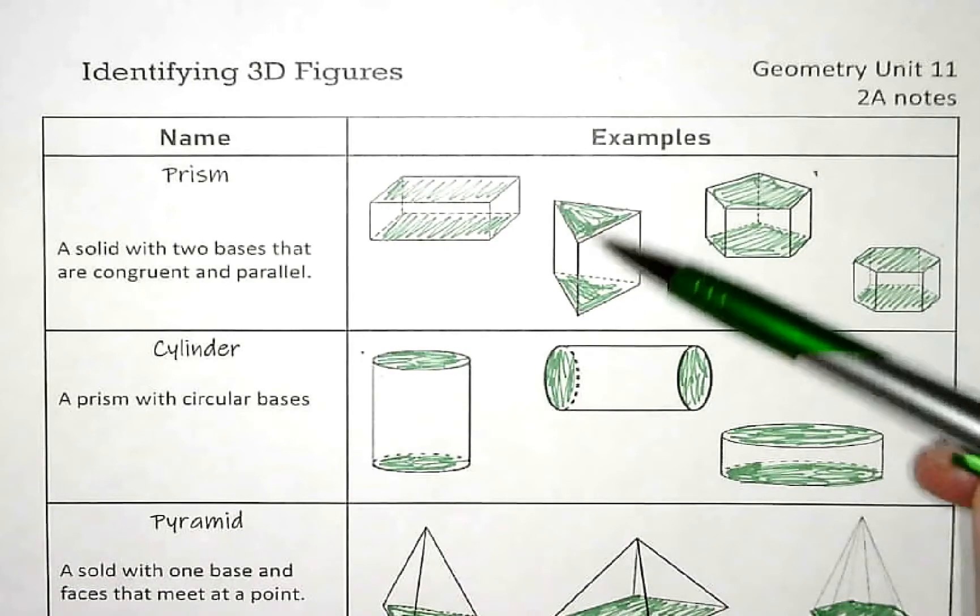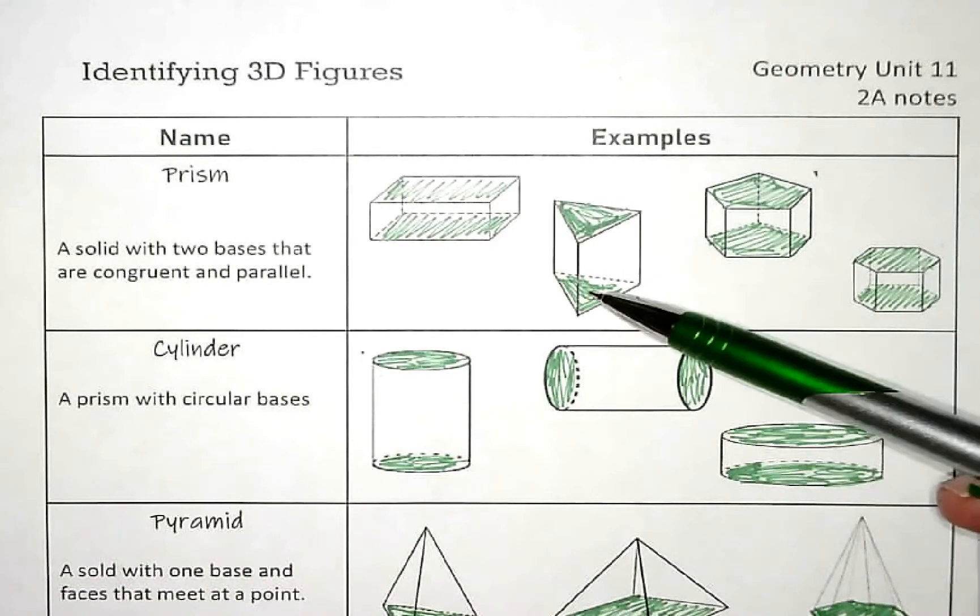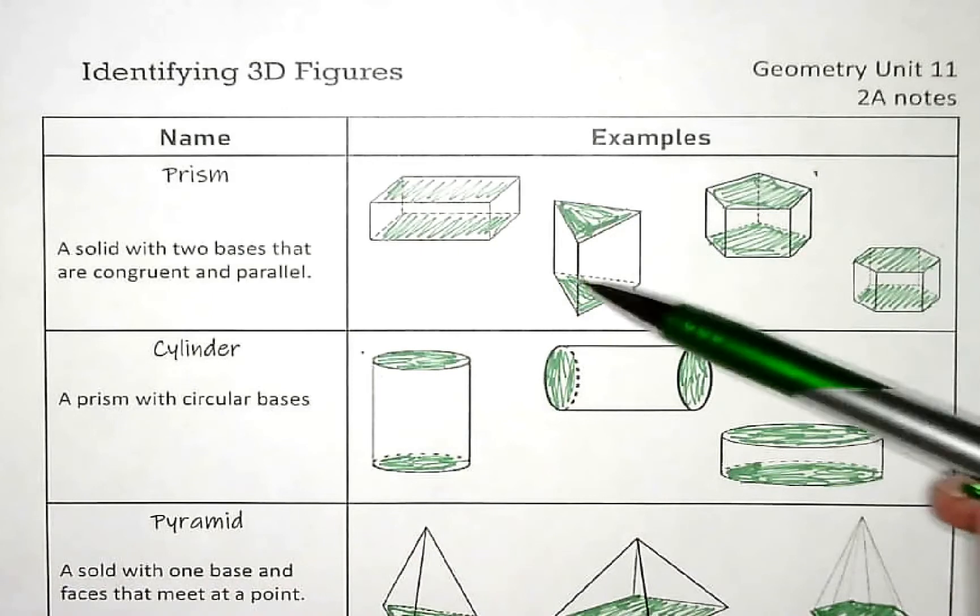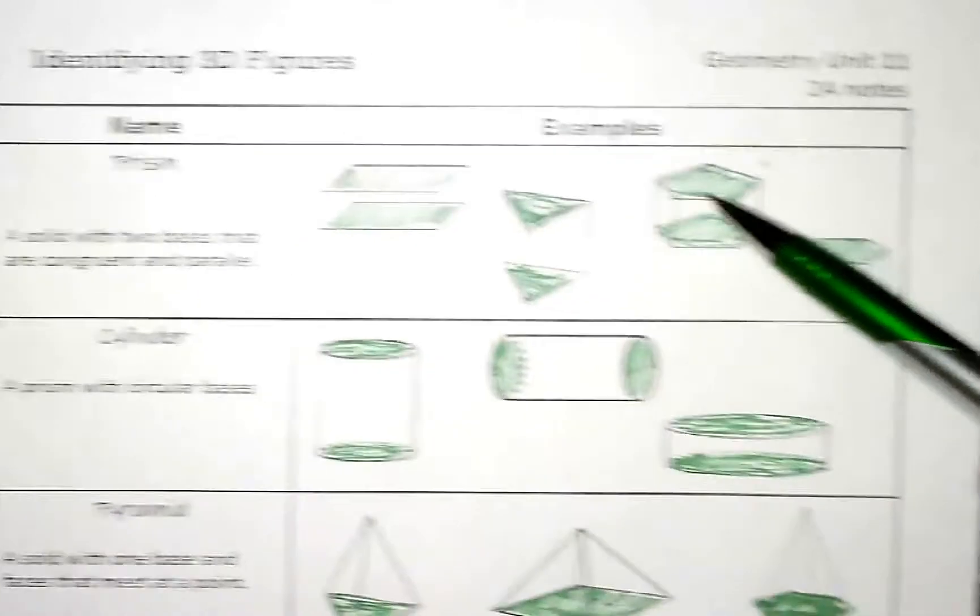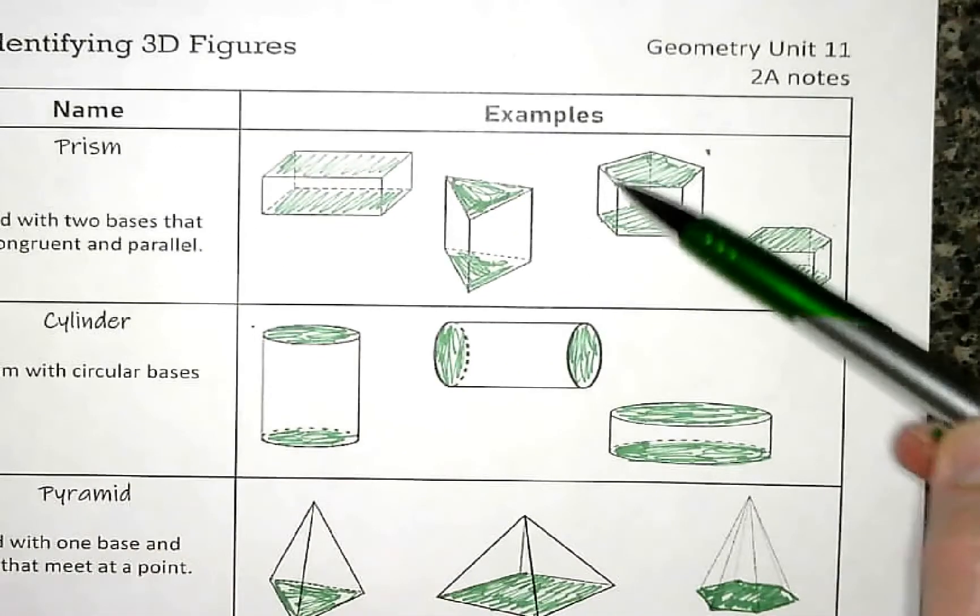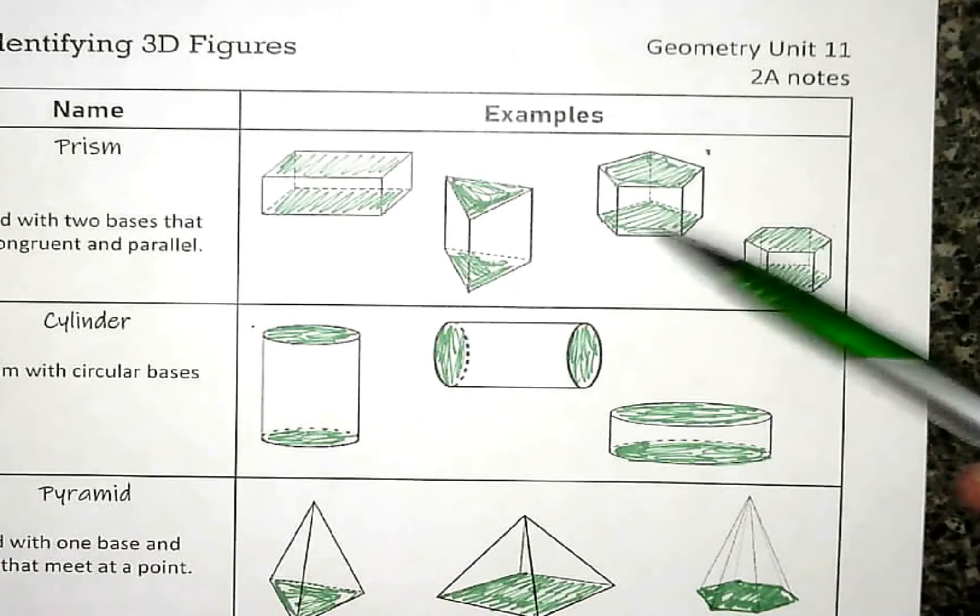This is called a triangular prism. The two bases are identical triangles or congruent triangles. This is a hexagonal, excuse me, pentagonal because the sides or the bases are pentagons.